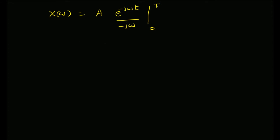Upon substitution of these values, we get the expression: a times (1 − e^(−jωT)) divided by jω. We handled the sign by taking the minus from the denominator, so we have (1 − e^(−jωT)) over jω.